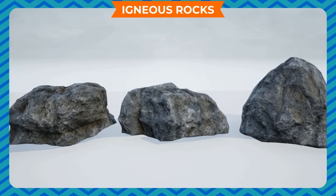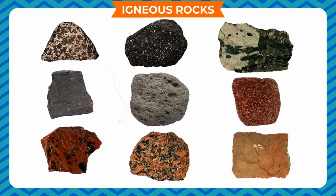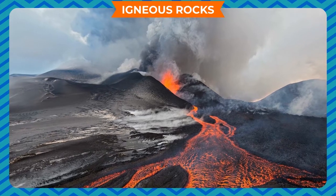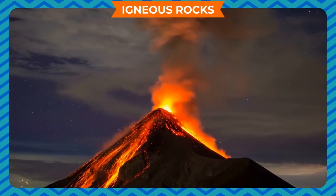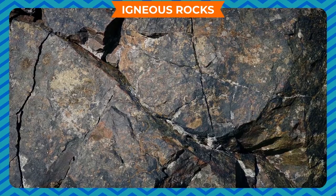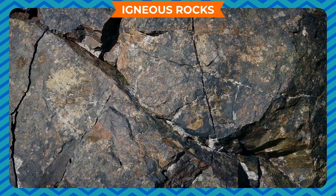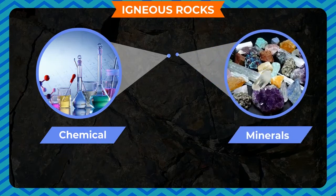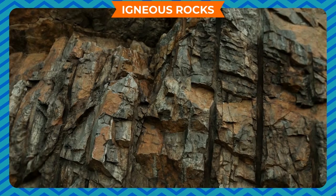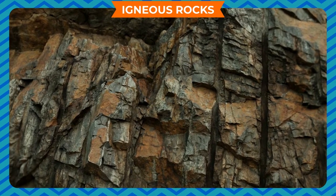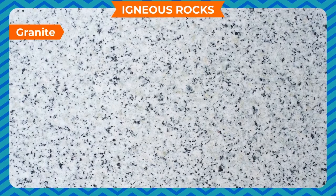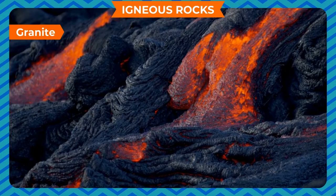Igneous rocks. Igneous means made from fire or heat. Igneous rocks are formed through cooling and solidification of magma — molten rocks beneath the Earth's crust — and lava, which is molten rock that erupts from volcanoes onto the Earth's crust. These are the most common type of rocks on the Earth's surface and mainly include various chemicals and minerals. Based on the minerals present and their cooling rate, igneous rocks are classified into many types. Granite is one such igneous rock.